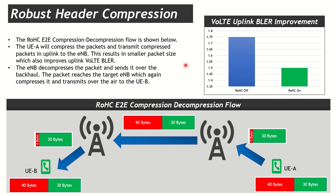ROHC does not improve downlink KPIs since downlink power is fixed and equally distributed across subcarriers. However, it does reduce PDSCH overhead in the downlink — smaller packets mean less PDSCH usage, which means more PDSCH capacity and more resources available for other users. Overall, ROHC is a must-have feature for VoLTE optimization and improves performance in multiple factors. We'll continue with VoLTE optimization sessions, so stay tuned.